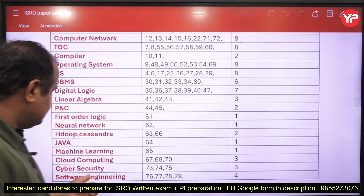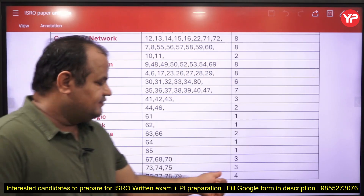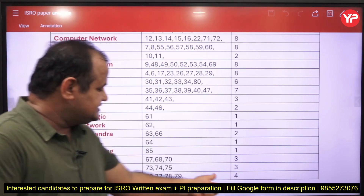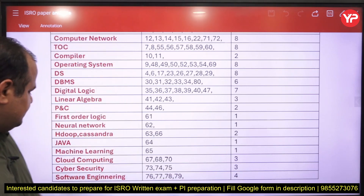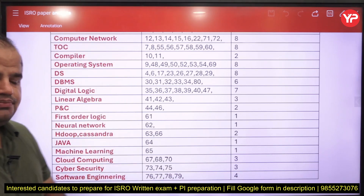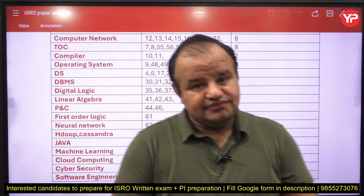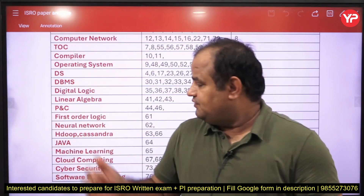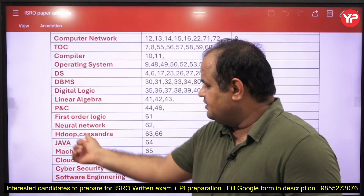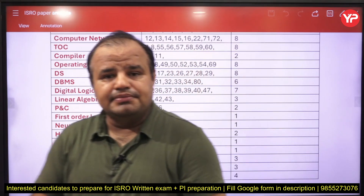Software engineering is asked many times — at least four to five questions — and last time they also asked four. Cyber security is another important topic. Data warehousing is also very important, and I can group Hadoop and Cassandra under the data warehousing and data engineering part.